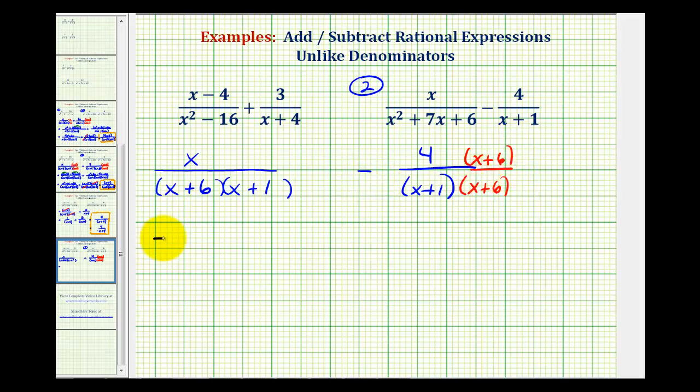And now that we have a common denominator, we can subtract by keeping the denominator the same and subtracting the numerators. So we'll have the quantity x plus six times the quantity x plus one. Remember we can write these factors in either order because it would not affect the product. And now in the numerator we have x minus four times the quantity x plus six.